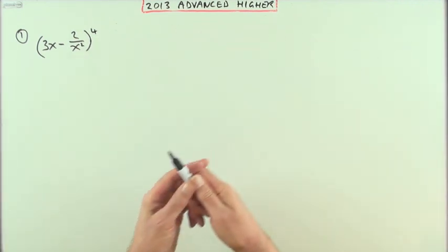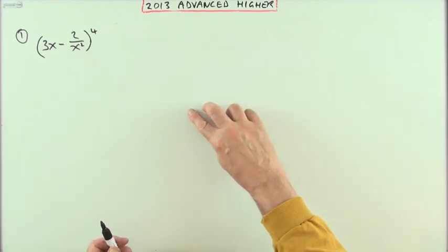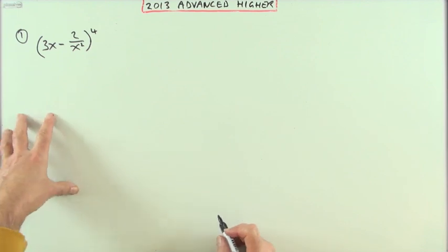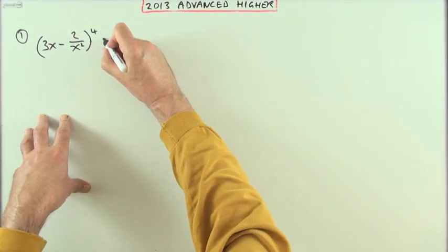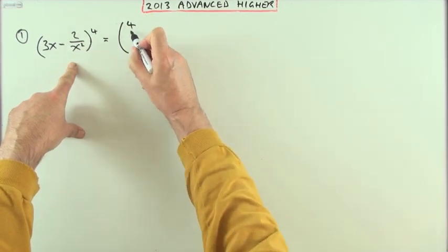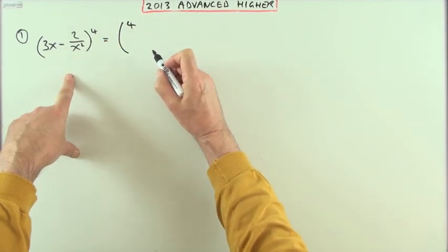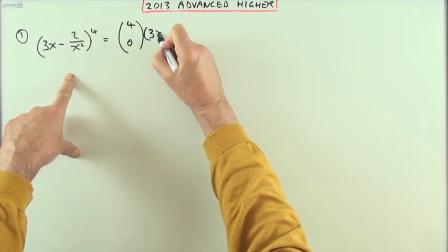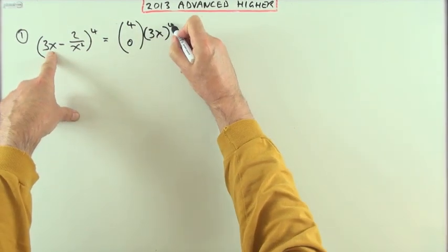We'll set it out formally first of all, so the combinations would be from four. There are four brackets to choose these objects from, starting with zero, meaning that I'm going to have all four of these and none of them, and then continuing that pattern for the remaining terms.